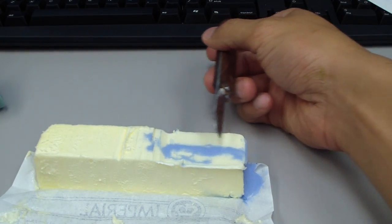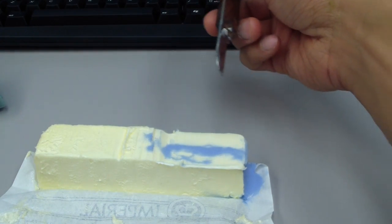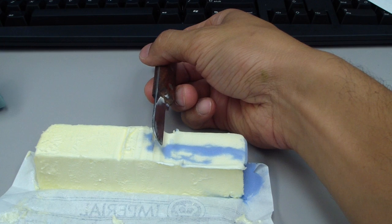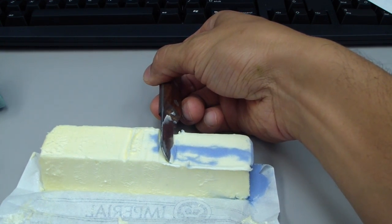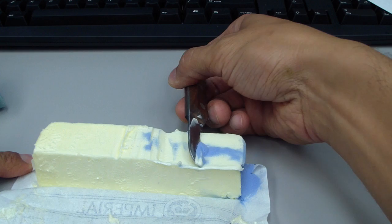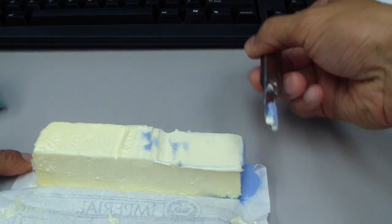So a positive rake angle relative to the direction of travel of my burr results in more of a cutting action.